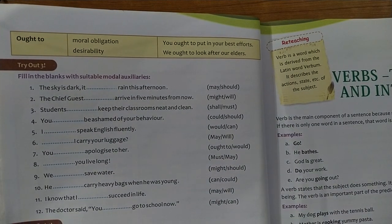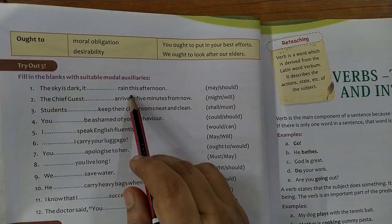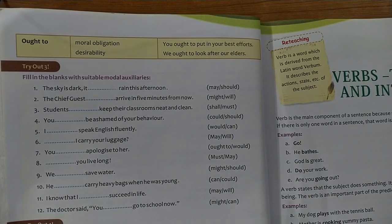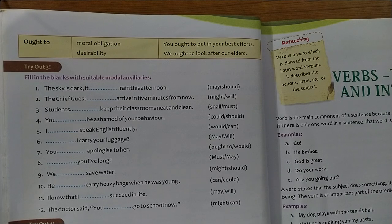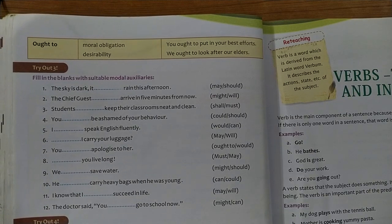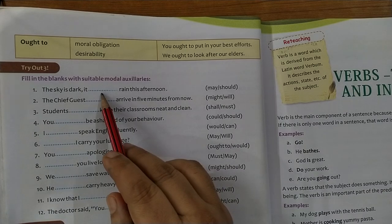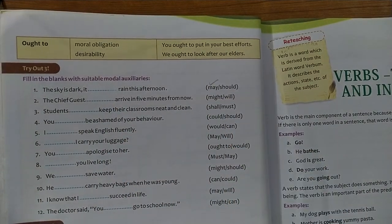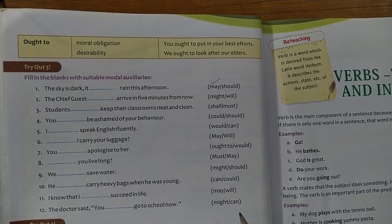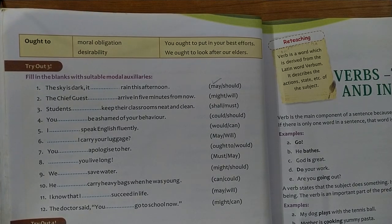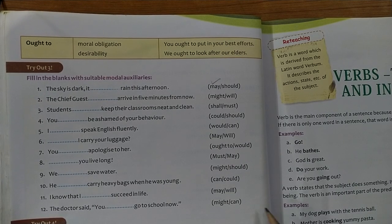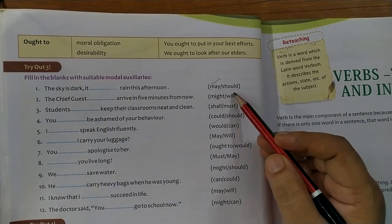Try out 3 — fill in the blanks with suitable modal auxiliaries. 'The sky is dark. It ___ rain this afternoon.' May or should? We know 'may' is used to indicate a strong possibility, and 'should' is used to ask for a suggestion. Here we are predicting a possibility, so we use 'may'. Next: 'The chief guest ___ arrive in five minutes from now.' Might or will? The answer is 'will' — because we know he is definitely going to arrive within five minutes in the future.